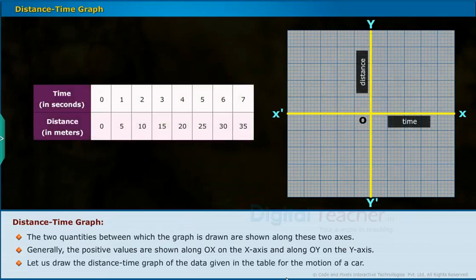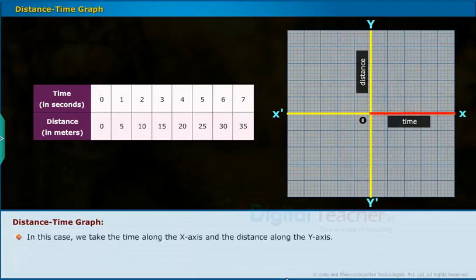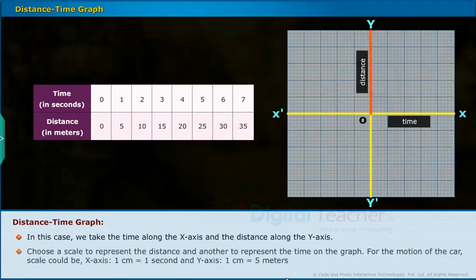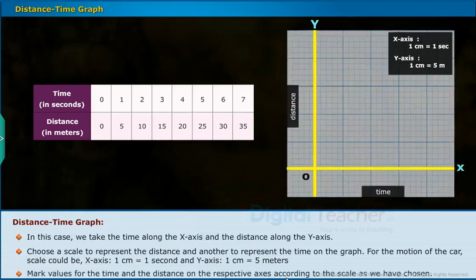Let us draw the distance-time graph of the data given in the table for the motion of a car. Decide the quantity to be shown along the X axis and that to be shown along the Y axis. In this case, we take the time along the X axis and the distance along the Y axis. Choose a scale to represent the distance and another to represent the time on the graph. For the motion of the car, scale could be X axis: 1 second = 1 centimeter and Y axis: 5 meters = 1 centimeter. Mark values for the time and the distance on the respective axis according to the scale as we have chosen.